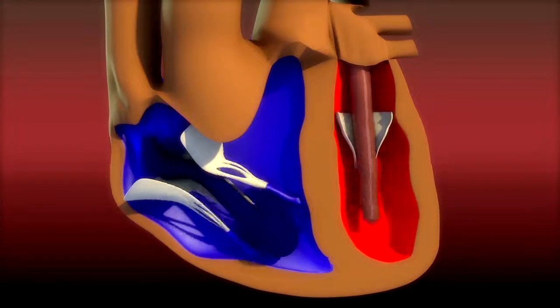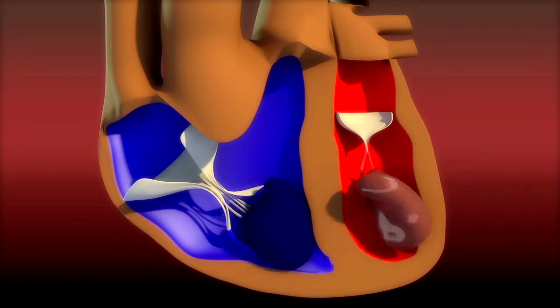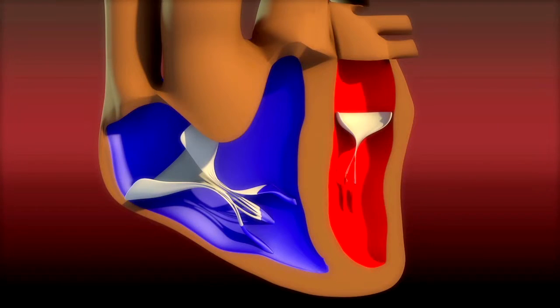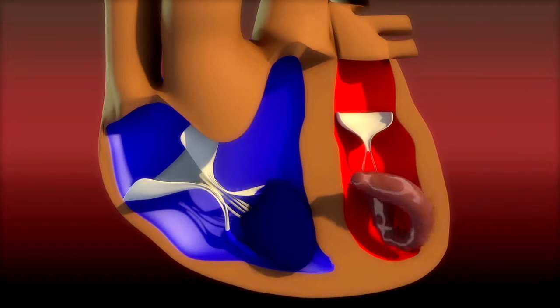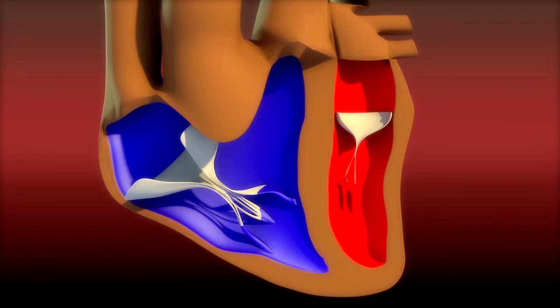Valves, openings that separate atria and ventricles, open in one direction toward ventricles to let the blood pass through. For that, blood cannot flow backward into the atria.